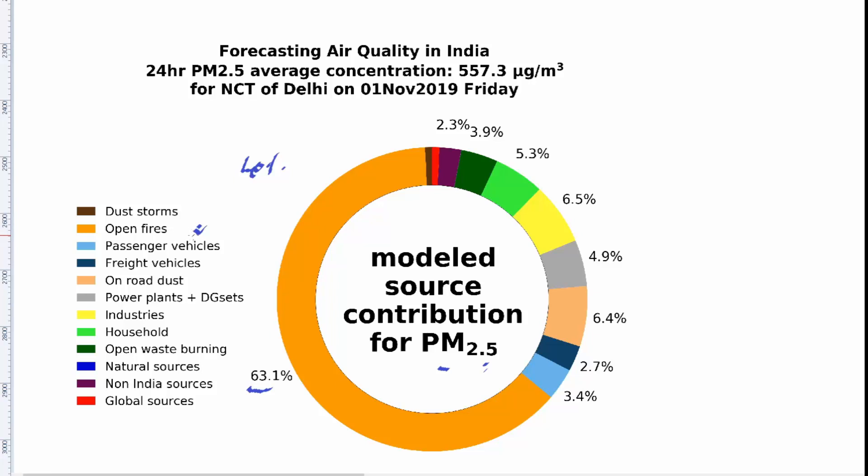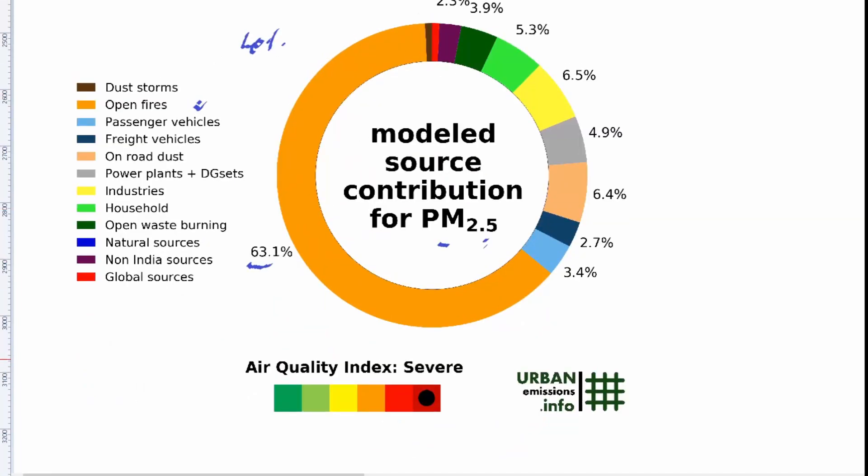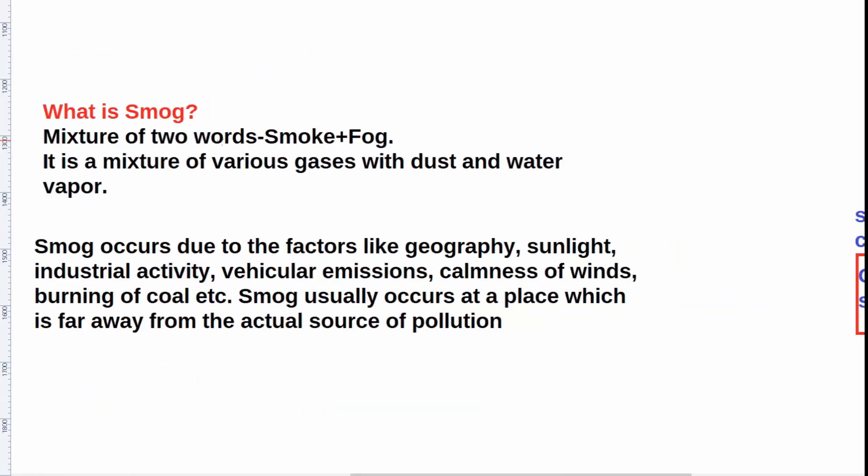And in Delhi, according to a government source, the contribution is almost 40%. However, we cannot blame only open fires, the stubble burning by the farmers of Punjab and Haryana, but other factors also contribute to the situation of Delhi.